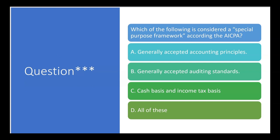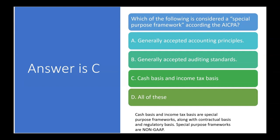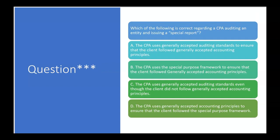Here's a question: which of the following is considered a special purpose framework according to the AICPA? A — generally accepted accounting principles? No, that's not a special purpose framework; a special purpose framework is one that's not GAAP. B — generally accepted auditing standards? No, that's not a reporting framework. C — cash basis and income tax basis? Yes. Cash basis and income tax basis are special purpose frameworks, along with contractual basis and regulatory basis. Special purpose frameworks are non-GAAP.